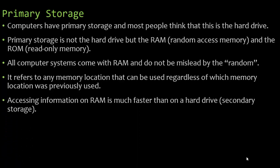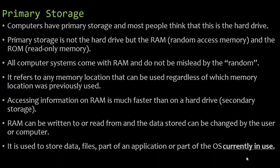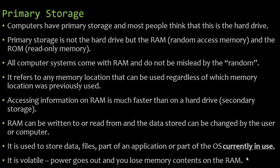Accessing information on RAM is much faster than accessing information on a hard drive, which is our secondary storage. RAM can be written to or read from, and the data stored can be changed by the user or computer. It's used to store data, files, part of an application, or part of the operating system currently in use. RAM is volatile — when the power goes out or you shut down your computer, you lose the memory contents currently on the RAM.